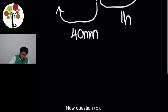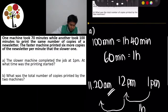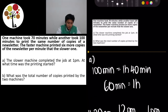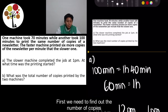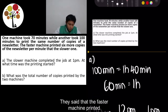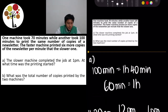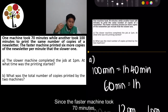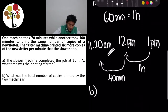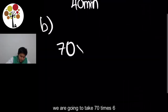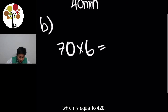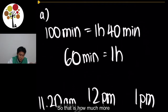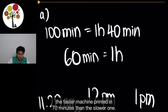Question B: What was the total number of copies printed by the two machines? First, we need to find out the number of copies each machine has to print. The faster machine printed 6 more copies per minute than the slower one. Since the faster machine took 70 minutes, we take 70 times 6, which equals 420. That is how much more the faster machine printed in 70 minutes than the slower one.